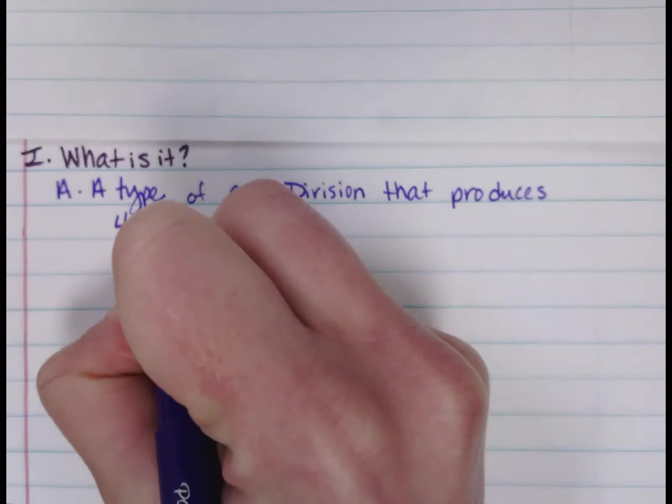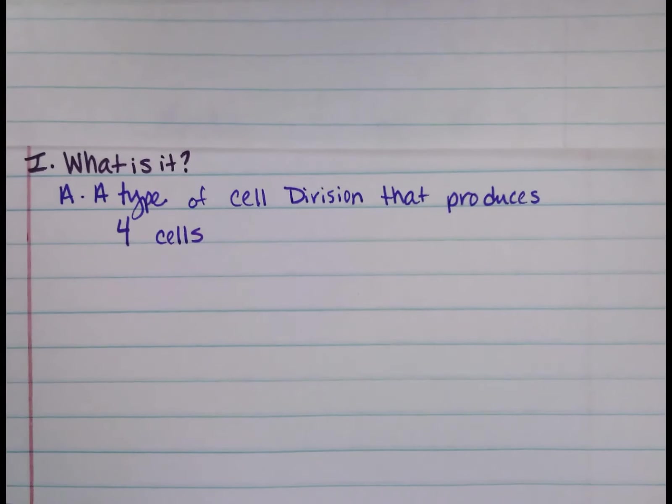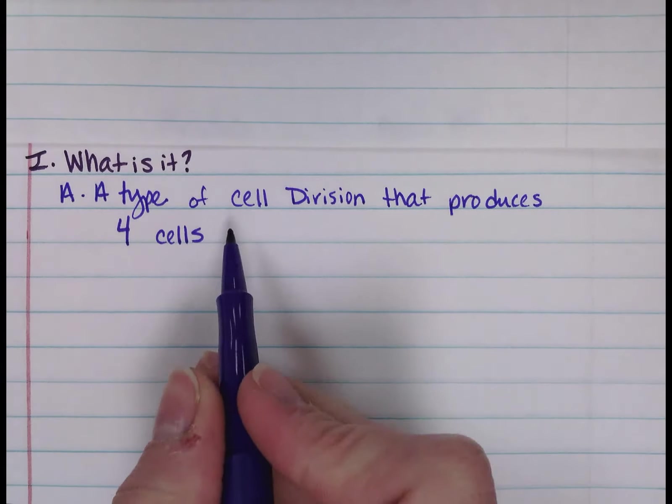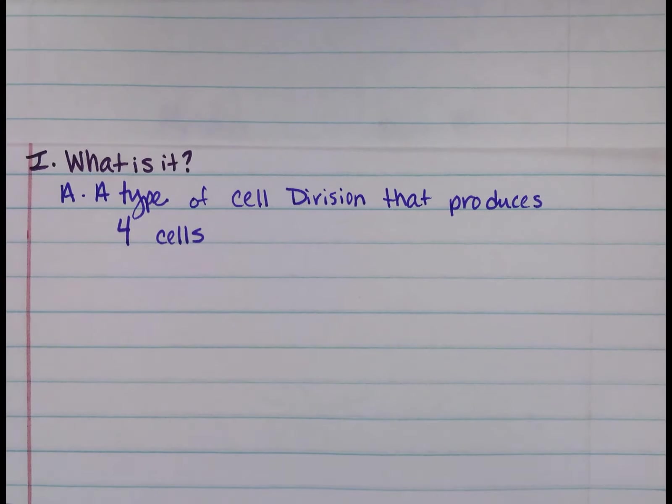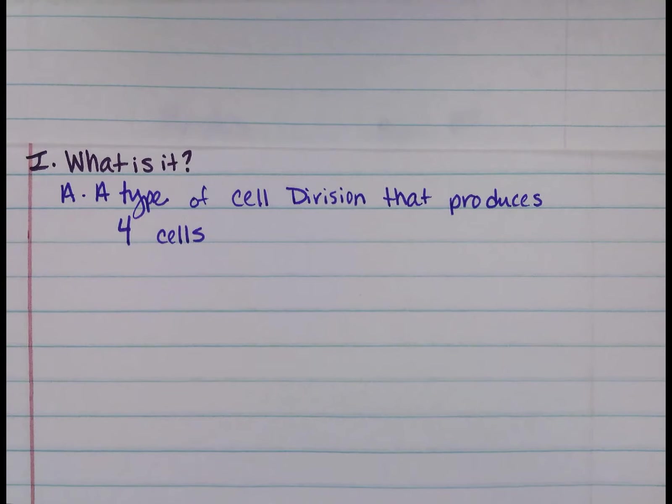The difference between mitosis and meiosis is that meiosis produces four, but mitosis produces only two. And that's because meiosis actually goes through two cell division cycles, as opposed to mitosis which only goes through one.